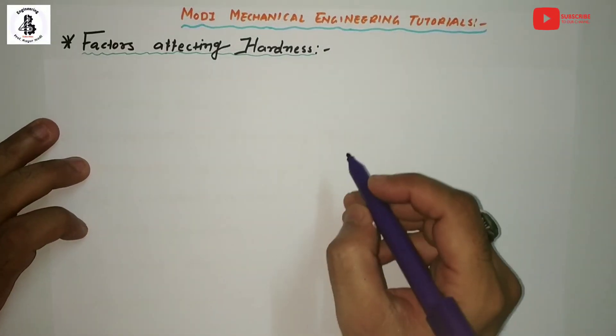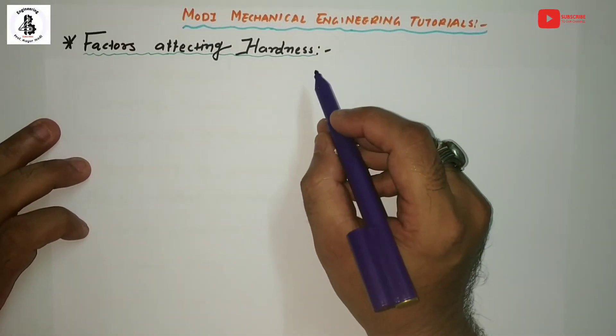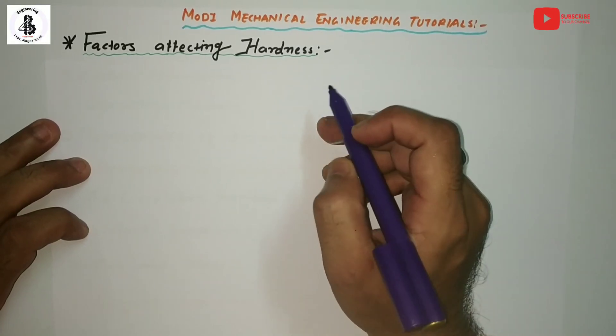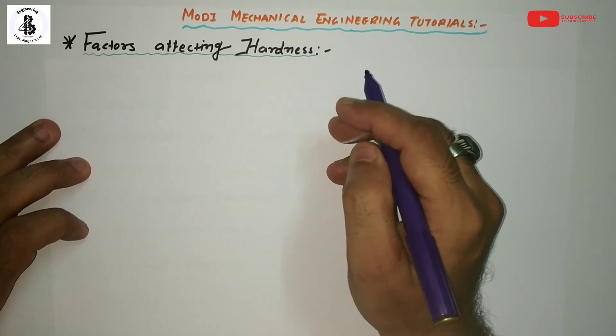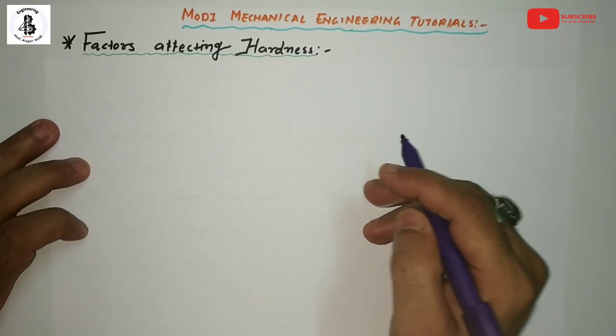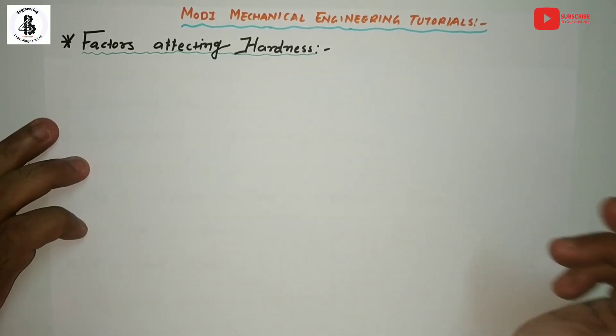If you want to learn the hardening process for getting better hardness in the microstructure, you will find a link in the description box. Let us see Factor 1.